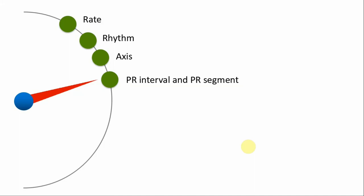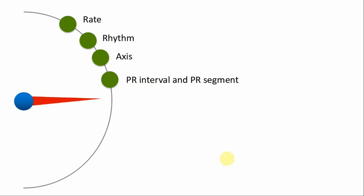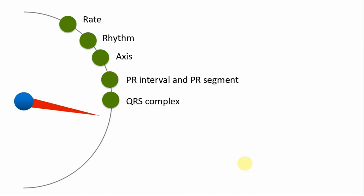The PR segment is important in the diagnosis of pericarditis. After P wave and PR interval, look at the QRS complex: is it narrow or wide? Is it regular or irregular — regularly regular, irregularly irregular, or regularly irregular? There are different varieties, which we will discuss in another video.